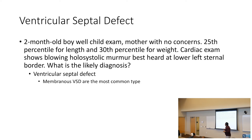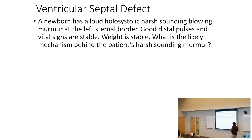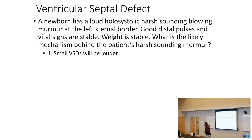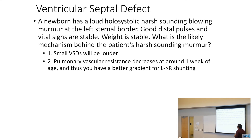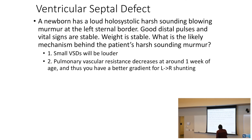A newborn with a loud, holosystolic, harsh-sounding murmur at the left sternal border with good distal pulses and stable vital signs — this is a smaller VSD. The louder the murmur, the smaller the hole, because there's more pressure going through that small opening. Remember: pulmonary vascular resistance decreases around one week of age. When the baby takes that first breath, you get a better gradient for left-to-right shunting rather than right-to-left.